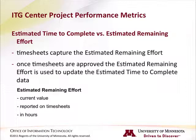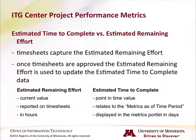One value — the estimated remaining effort — represents the current value reported in hours on timesheets. The other value — estimated time to complete — represents a point-in-time value and it relates to the metrics as of the time period that is selected in the portlet preferences. The estimated time to complete is what is reported in the metrics portlet and it is displayed in days rather than hours.